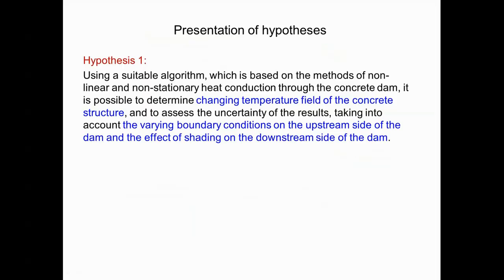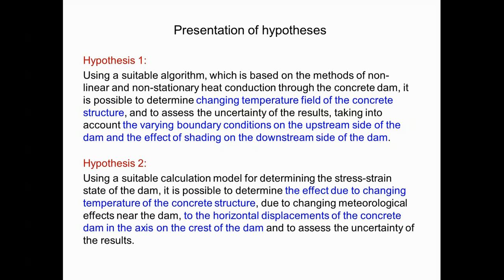Two hypotheses were verified. The first hypothesis: using a suitable algorithm based on methods of nonlinear and non-stationary heat conduction through the concrete dam, it is possible to determine the changing temperature field and assess the uncertainty of the results, taking into account varying boundary conditions on the upstream side and the effect of shading on the downstream side. The second hypothesis: using a suitable calculation model, it is possible to determine the effect of changing temperature on horizontal displacements and assess the uncertainty of the results.